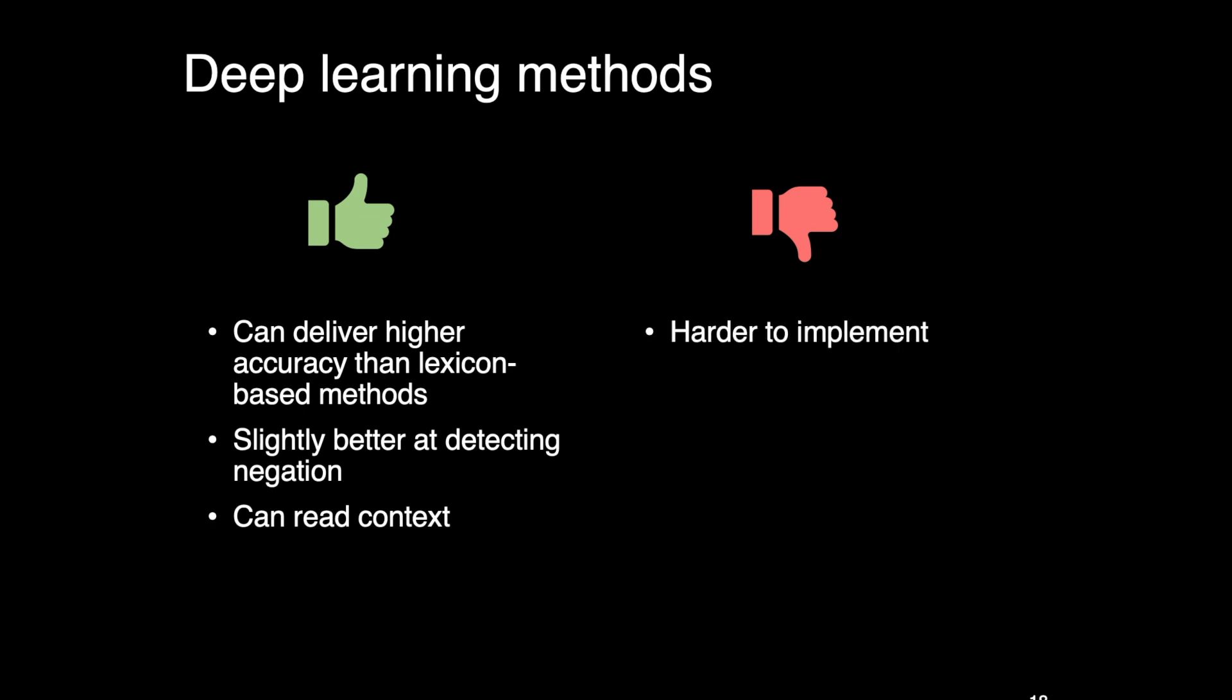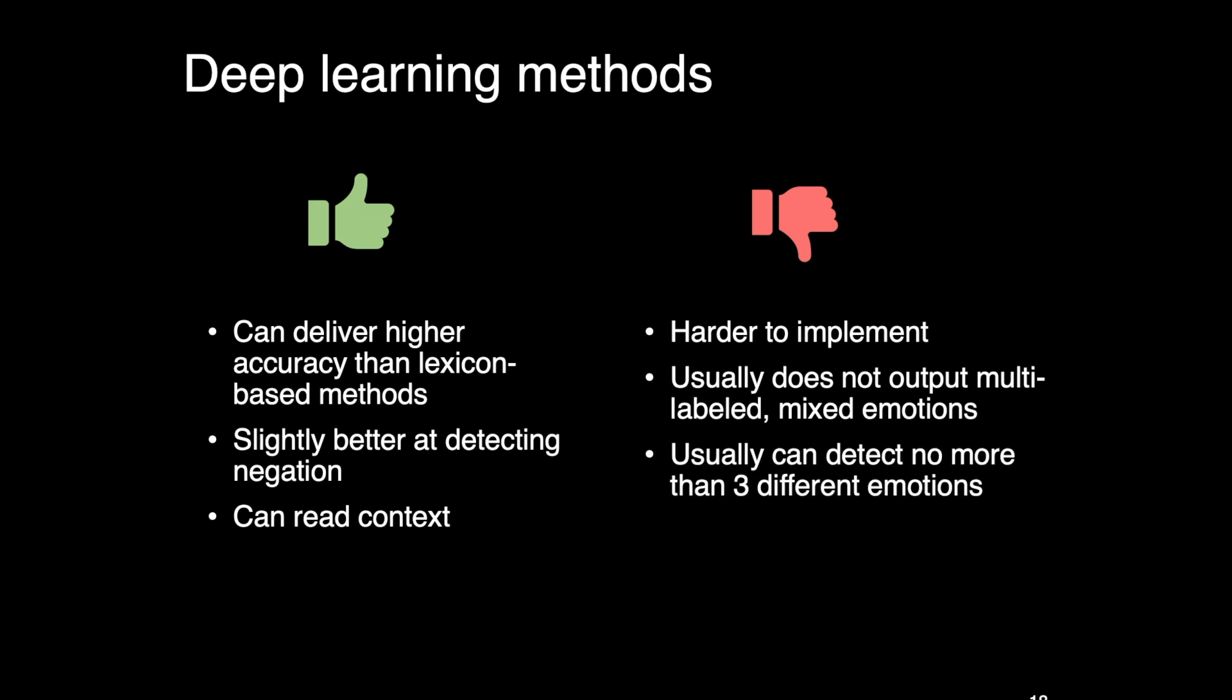The cons are, number one, it is harder to learn and understand and implement deep learning methods. Deep learning methods usually do not output multi-labeled mixed emotions, although there are recent publications that are capable of doing this. But even then, they usually detect no more than three different emotions. So it's a very restricted range of emotions. We also need to feed the model label training data. So you'll need to spend some time doing manual labeling to provide the ground truth.